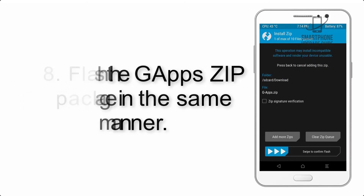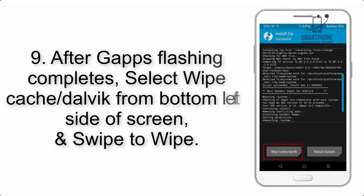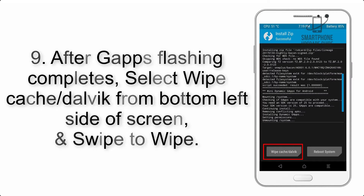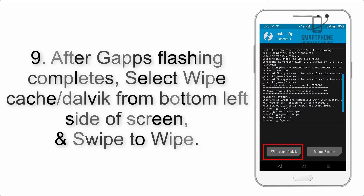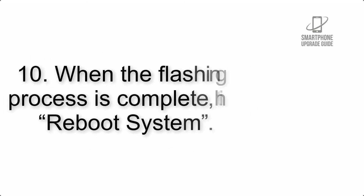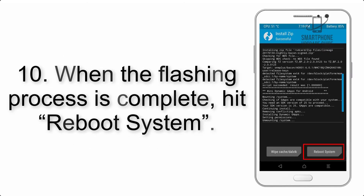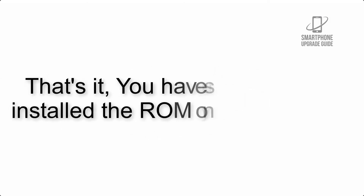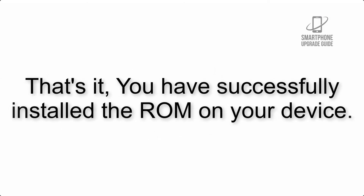Step 8: Flash the GApps zip package in the same manner. Step 9: After GApps flashing completes, select Wipe Cache and Dalvik from the bottom left side of the screen and swipe to wipe. Step 10: When the flashing process is complete, hit Reboot System. That's it — you have successfully installed the ROM on your device.